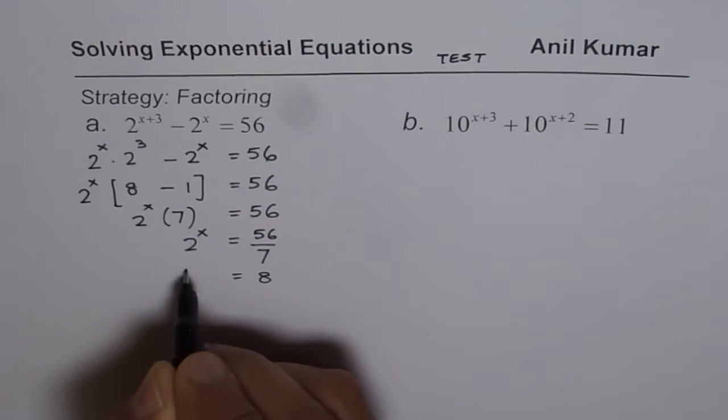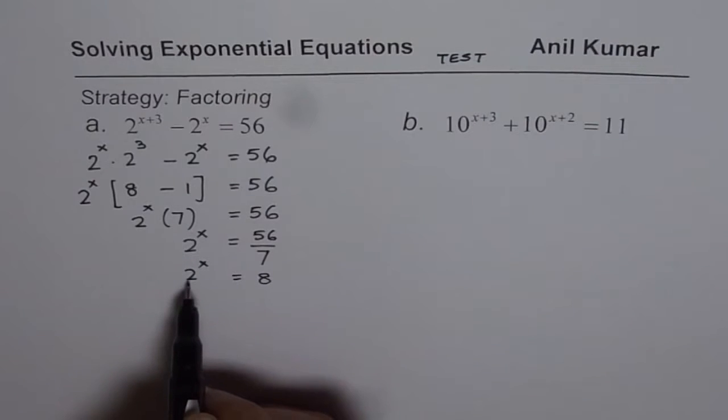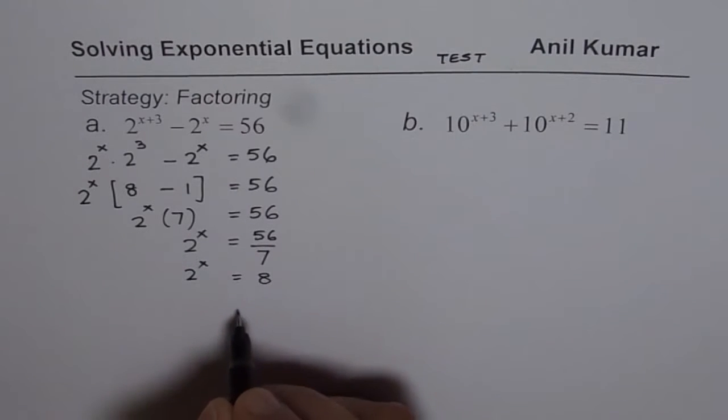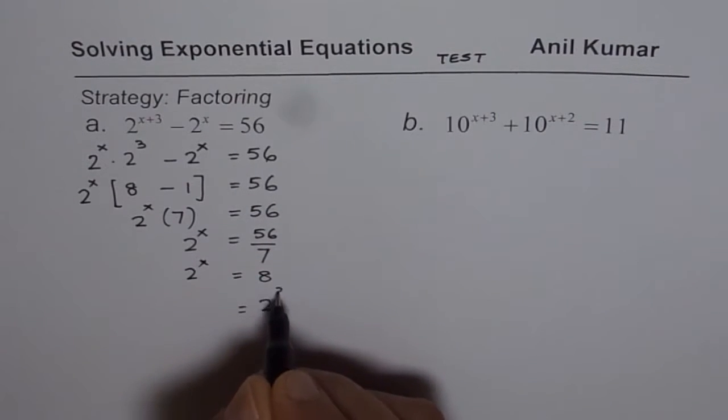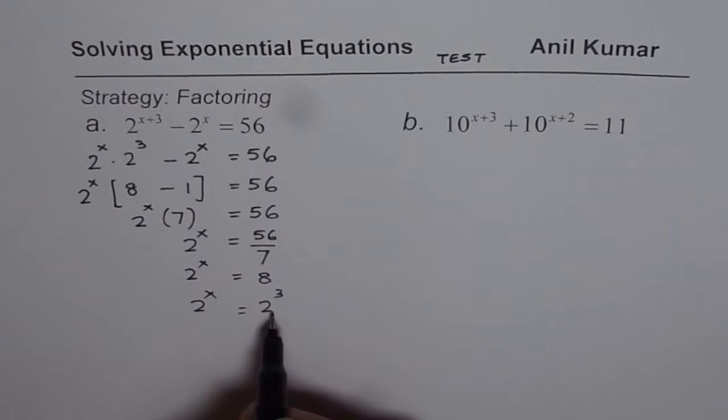Now we need to write 8 as a number with 2 as the base - common base. That is 2 to the power of 3. So if I write it as 2 to the power of 3, I'll have same bases, therefore the exponent value should be exactly the same. So x equals 3 is the solution.